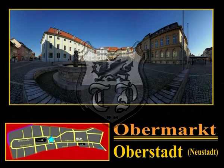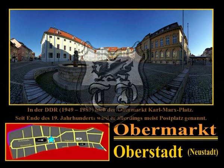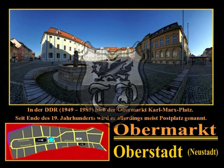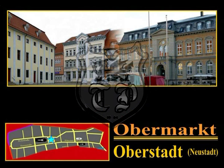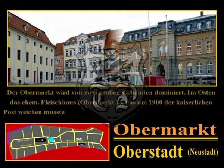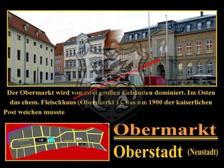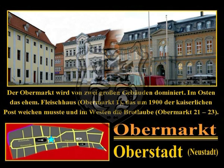Der Obermarkt ist der zentrale Marktplatz der Neustadt. Als Contralibium in Foro Novo Civitatis wurde er 1375 erstmals erwähnt; zuvor war er ein Teilstück des Salzmarktes, der sich von der Grasegasse bis zur heutigen Heuergasse erstreckte. Seinen Namen wechselte er sehr häufig: von 1882 bis 1933 Postplatz, von 1933 bis 1945 Hitlerplatz, von 1945 bis 1946 wieder Postplatz, und von 1946 bis 1990 Karl-Marx-Platz. Der Obermarkt wird von zwei großen Gebäuden dominiert: im Osten das ehemalige Fleischhaus Obermarkt 1, das um 1900 der kaiserlichen Post weichen musste, und im Westen die Brotlaube Obermarkt 21 bis 23.